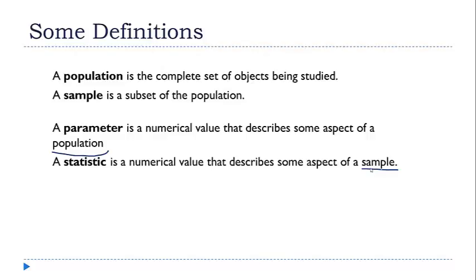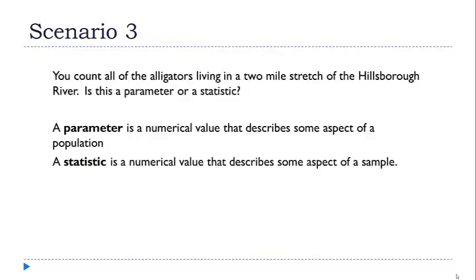Let's look at another scenario here that's going to illustrate that difference. In this scenario, we have a researcher collecting data on all of the alligators in a two-mile stretch of the Hillsborough River. Specifically, he's just taking a head count to see how many alligators there are. And the question is, is the final count a parameter or a statistic? Well, the answer is that we really can't tell based on what we've been told, because it depends on what the researcher plans to do with his data or what conclusions he wants to draw. If he's only interested in studying this one section of the river, then the two-mile stretch is the entire population he's interested in, so his alligator count would be a parameter.